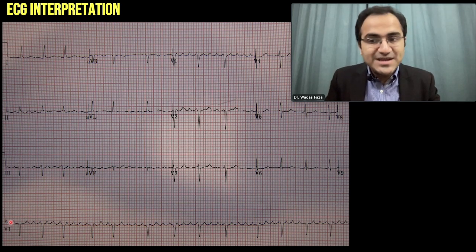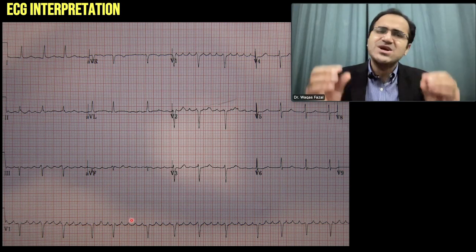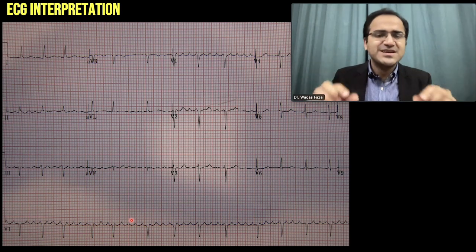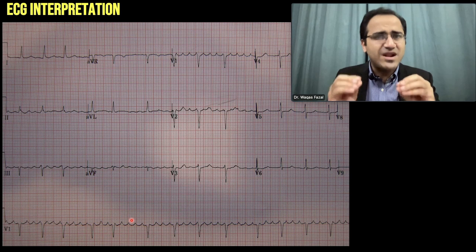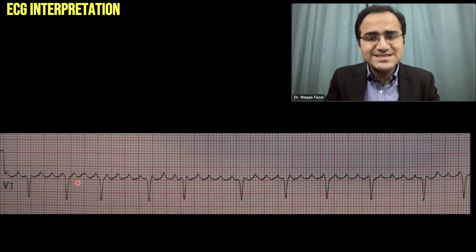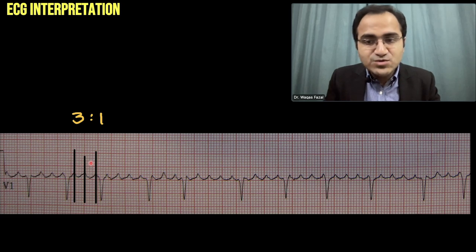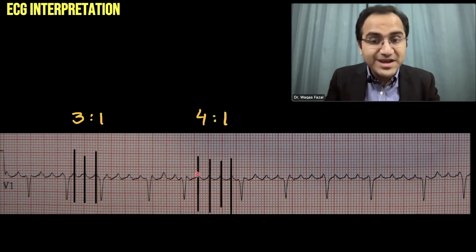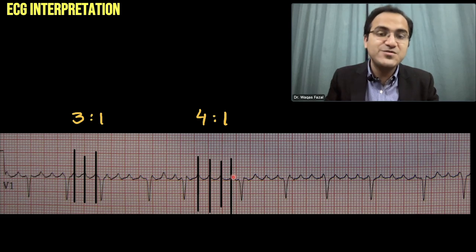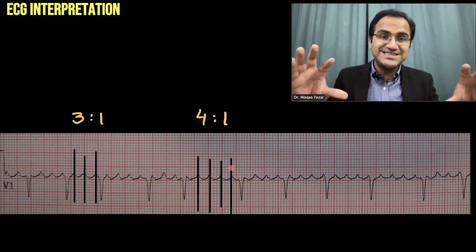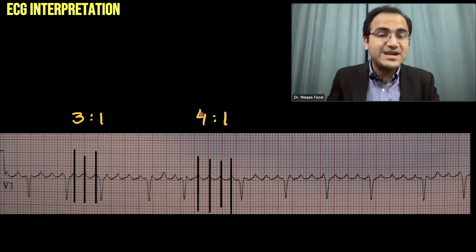Looking at this ECG, you can easily see the flutter waves in V1. This is the classical sawtooth appearance — pathognomonic for atrial flutter. Zooming in, you can count three flutter wave peaks followed by a QRS complex, giving a 3:1 ratio. In another section, there are four peaks followed by a QRS — a 4:1 ratio. Since both ratios appear within one ECG, this is atrial flutter with variable conduction.